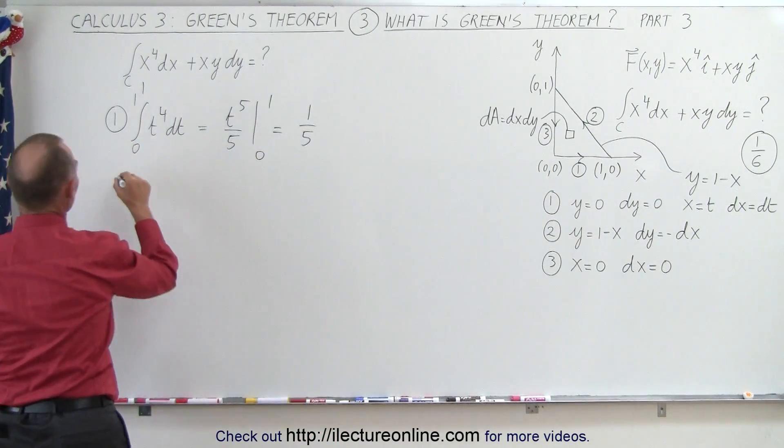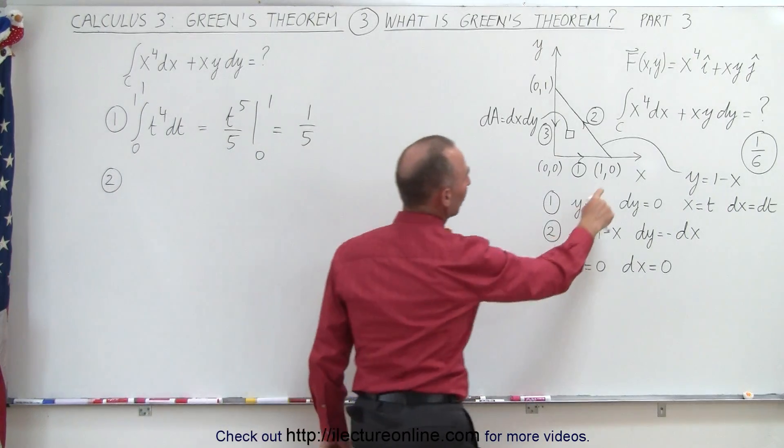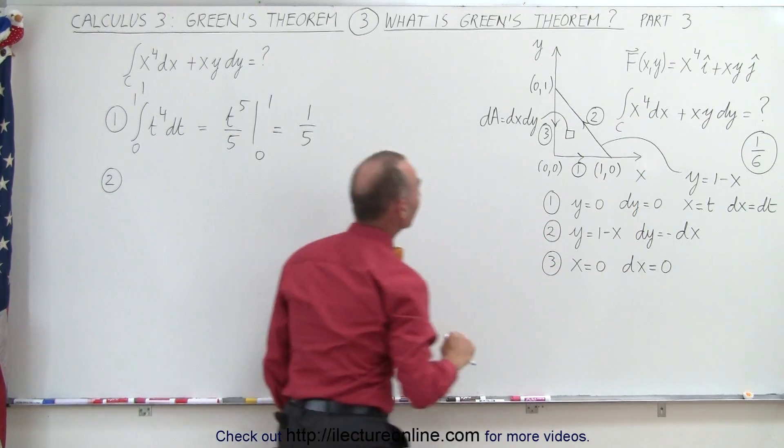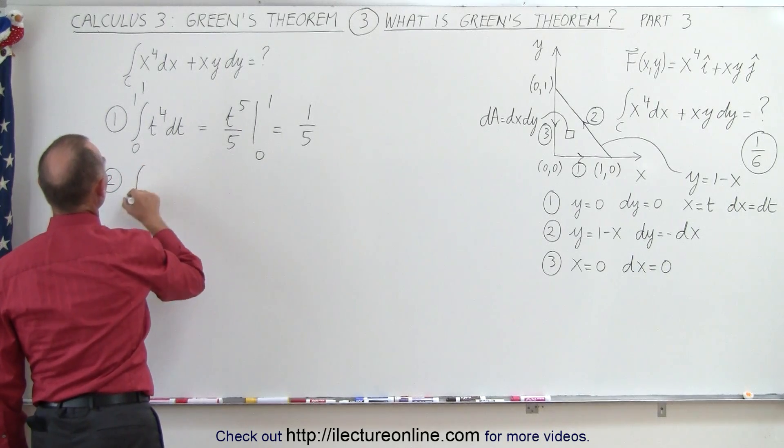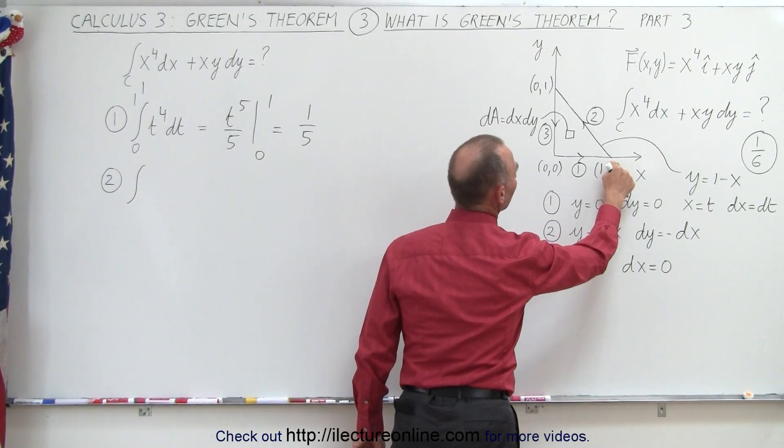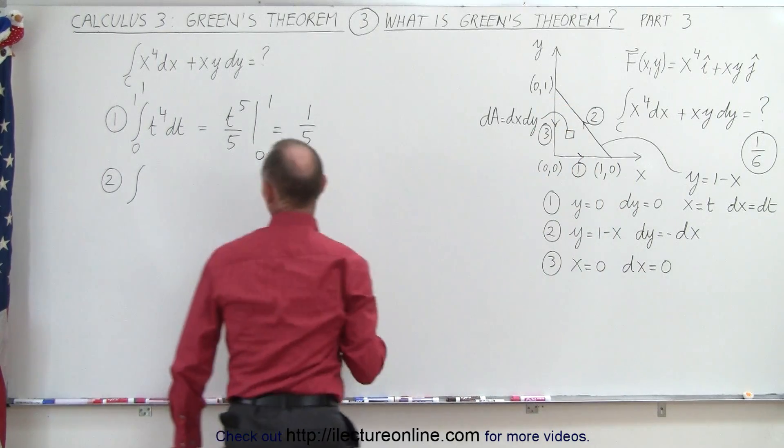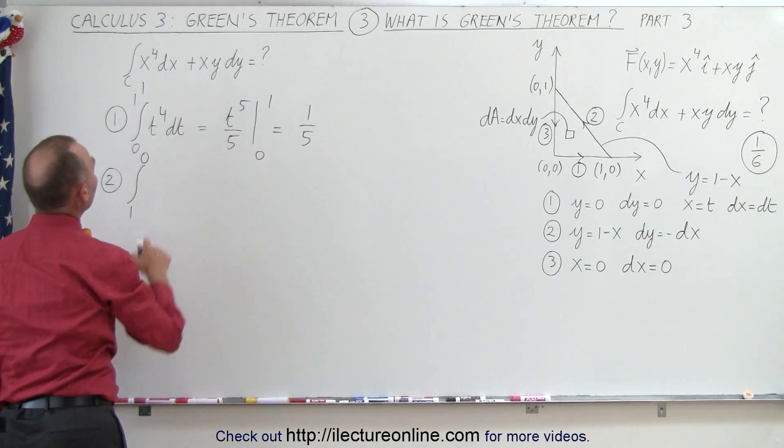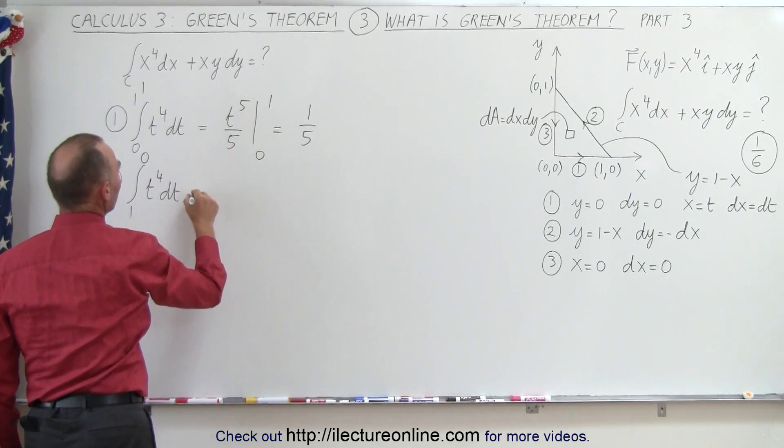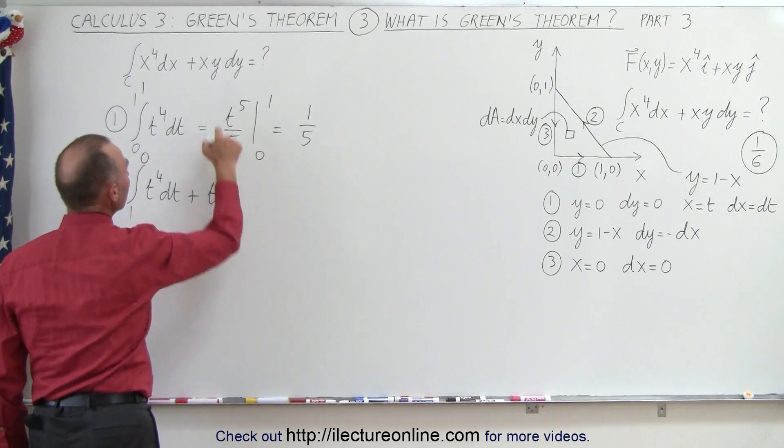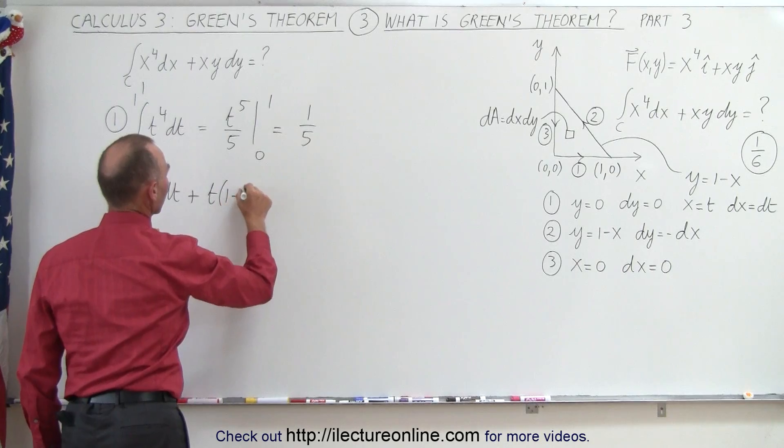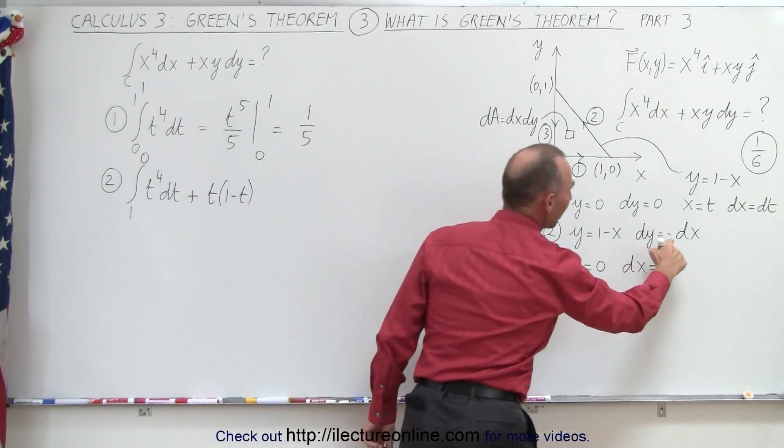All right, now let's do the second part. The second part, we're going to integrate from (1,0) to (0,1), and here we have x is going to be equal to t, so let's plug that in here. So we have the integral that would be from t equal to 1 to t equal to 0, so our limits are going to be from 1 to 0, t to the fourth dt, and now here we have x times y, so that would be plus x, which becomes t, and y is going to be 1 minus x, but since x equals t, that'll be 1 minus t, and dy is going to be a minus dt.